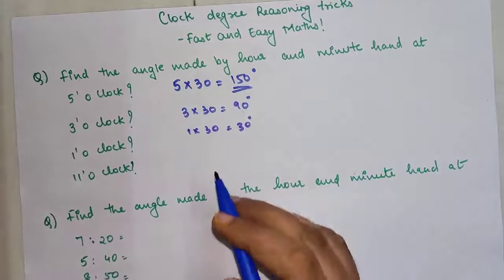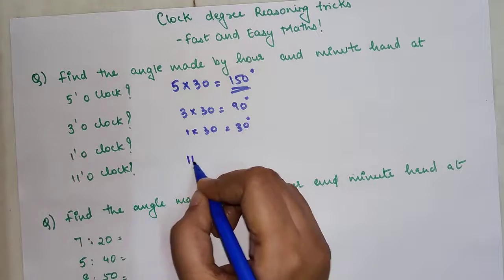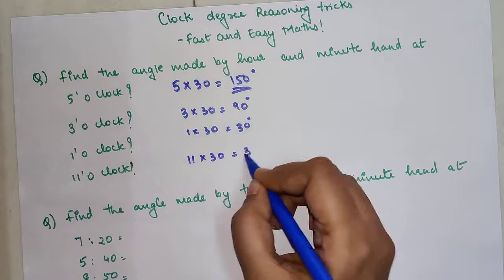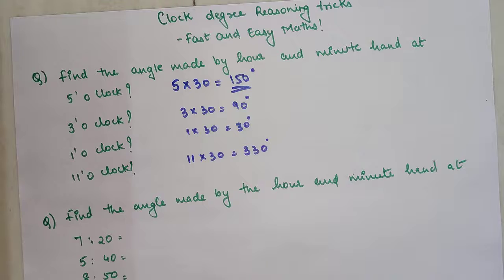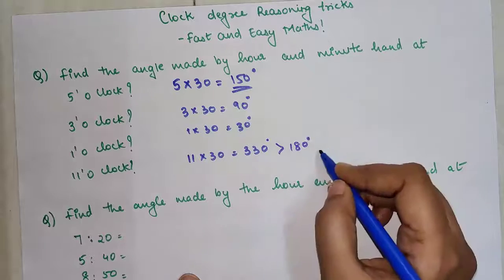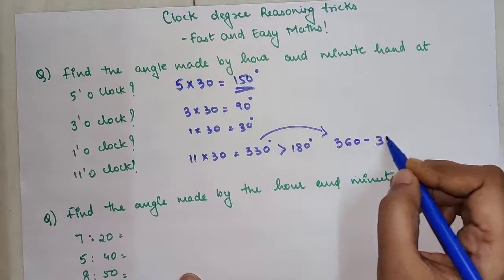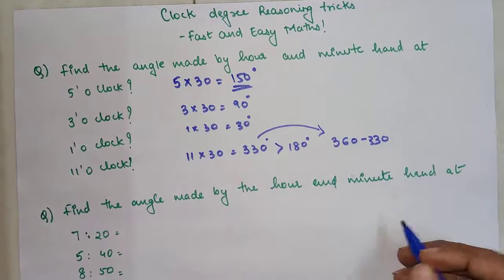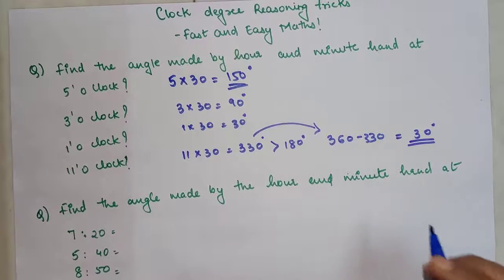So 30 degrees is your answer when it is 1 o'clock. And now here, 11 into 30, please understand this is 330. Whenever your answer is greater than 180 degrees, then what you have to do is just subtract that from 360. Subtract your answer from 360, so your final answer in this case would be 30 degrees. Please understand this is super important. If you miss out on this, you will end up making the wrong choice as your answer.